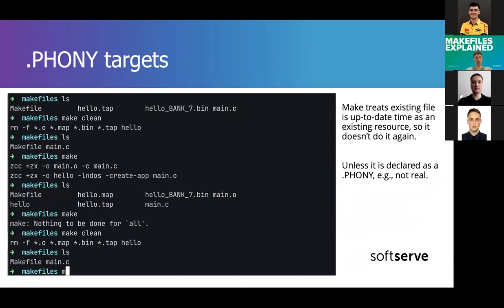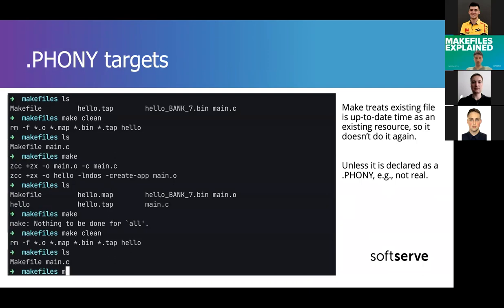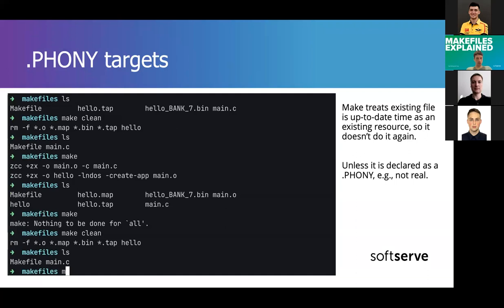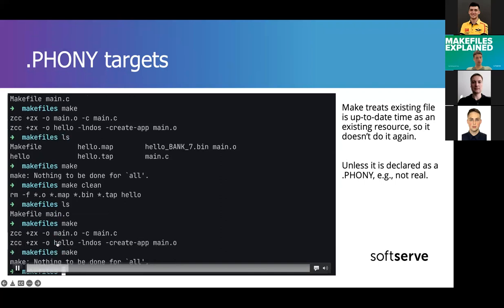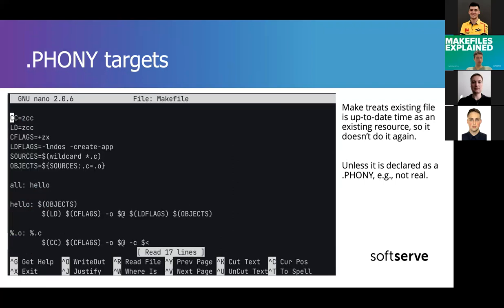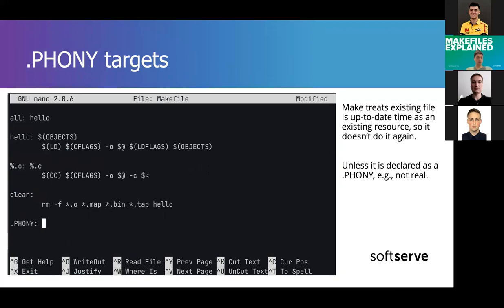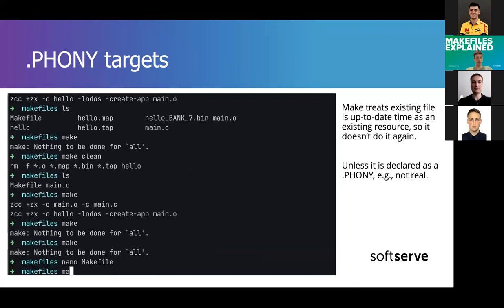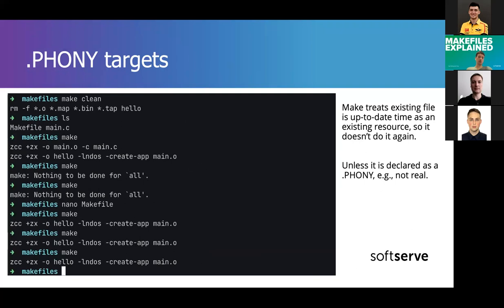Phony targets: sometimes you need to rebuild a resource even if the file denoting that resource already exists. Normally if the file exists, a consequent make will do nothing. But if you declare a resource as phony using .PHONY, it will be rebuilt every time. In this example I'm declaring 'hello' as phony, so every call will rebuild it. This can be useful at times.